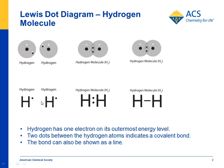In a Lewis dot structure, it's a very similar situation. You show one dot for the electron of hydrogen, and when they come together you show two dots as the covalent bond between them. They then take it a step further and use a line to indicate the covalent bond — so this is a hydrogen molecule, H2, in Lewis dot structure.